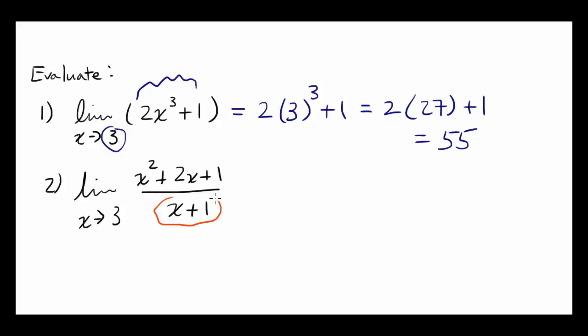In this case, when you plug x equals 3 into x plus 1, you get 4. 3 plus 1 is 4. Since 4 is not 0, you can evaluate this limit by plugging x into it. So it's going to be 3 squared plus 2 times 3 plus 1 over 3 plus 1,